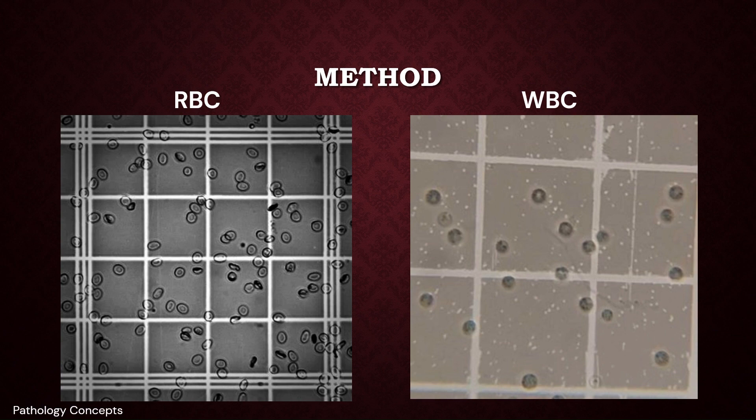Count the number of WBCs and RBCs. Repeat the same process twice and take the average number of WBCs and RBCs.